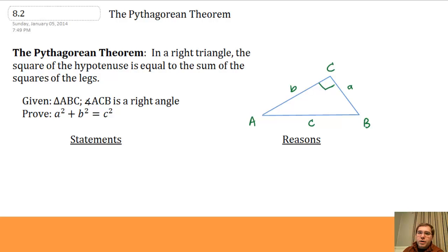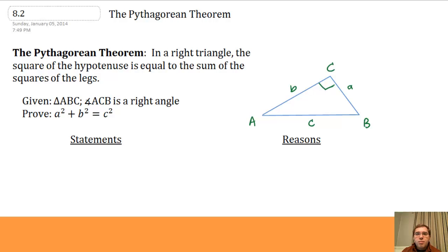This is section 8.2, the Pythagorean Theorem. We finally come to what is one of the most well-known and perhaps most useful theorems in all of mathematics. The Pythagorean Theorem is believed to have been proven by the Greek mathematician Pythagoras around the year 500 BC. It's been proven over and over again in over a hundred different ways.